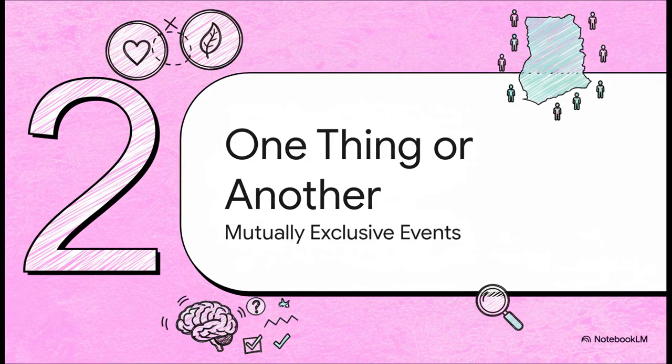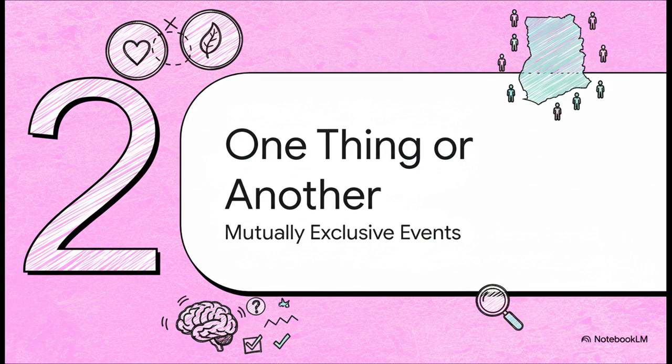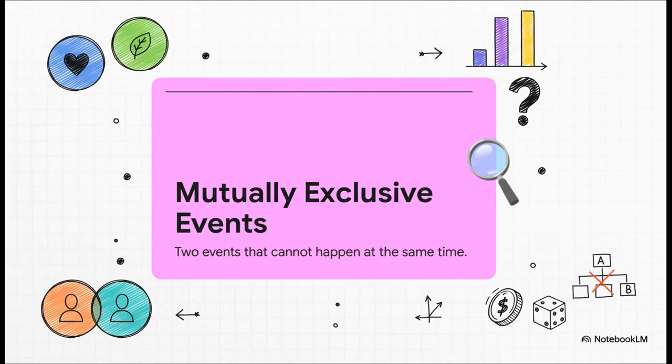All right, so we've got our events. Now, let's look at how they can relate to each other. And the absolute simplest relationship is when two events just cannot happen at the same time. We call these mutually exclusive events. I mean, the name pretty much says it all, right? They mutually exclude each other. It's a strict either or situation. It's one or the other, period. If one of these things happens, you know for a fact that the other one didn't.